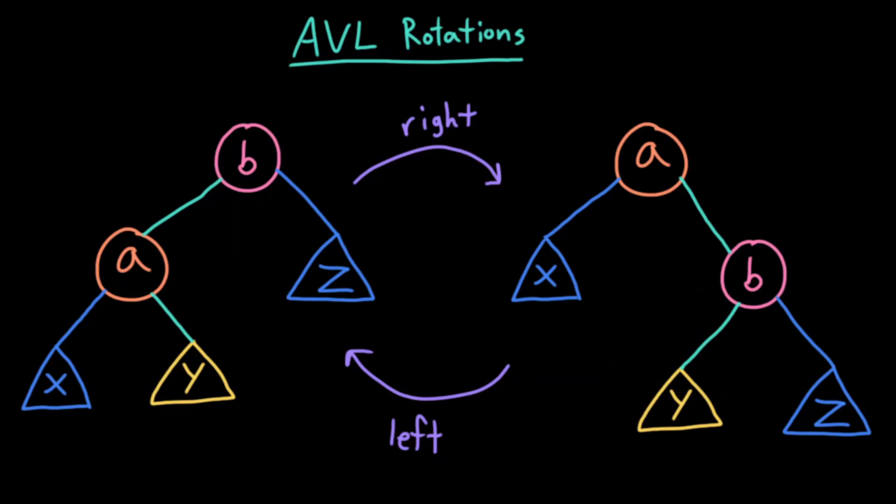Sometimes we want to be able to restructure a binary search tree without damaging its binary search tree properties. To do so, we can make use of what are called AVL rotations.